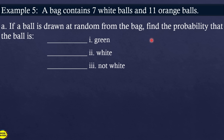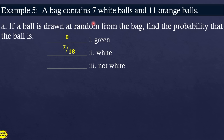Example 5: A bag contains 7 white balls and 11 orange balls. If a ball is drawn at random, find the probability that the ball is green. Since there are no green balls in the bag, the probability is 0. How about the probability that the ball is white? The total number of balls (sample space) is 7 + 11 = 18. Since there are 7 white balls, probability = 7 over 18. How about not white? That means orange, and there are 11 orange balls, so probability = 11 over 18.